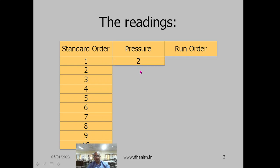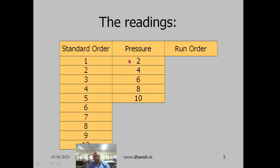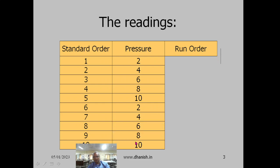The first replication standard order is usually written in increasing order. So the pressure varies as 2, 4, 6, 8, 10 — starting from 2 because 0 is not possible. That is the first replication. If you repeat the whole thing again: 2, 4, 6, 8, 10 — that is the second replication.